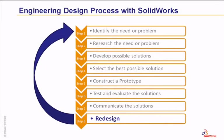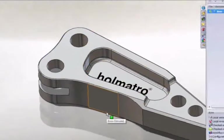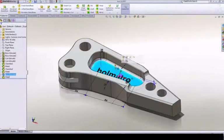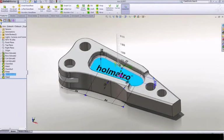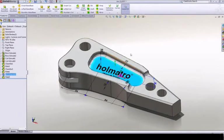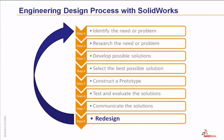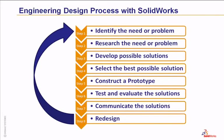Step 8 of the engineering design process is to redesign. Determine if your solution meets the criteria specified earlier in the design process. If not, find out which aspect of your solution could be improved. If your solution does meet the design criteria, you should still attempt to improve your design by making it more environmentally friendly and cost effective. These 8 steps make up the engineering design process, and they are repeated as often as needed until all the parties involved are satisfied with the solution.